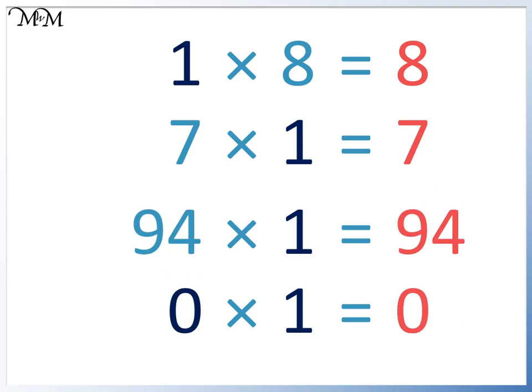In the last example, we also know that any number multiplied by 0 equals 0.